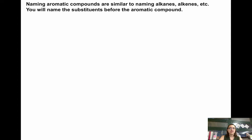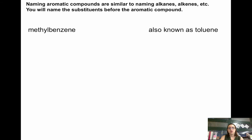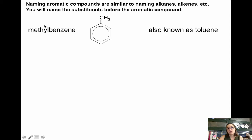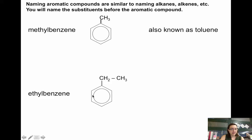Naming aromatic compounds is very similar to naming alkenes and alkynes. You're always going to name the substituents before the aromatic compound. So if you had a methyl group on benzene, the longest chain is your aromatic — that's benzene — so you'd just say methylbenzene. There's no need to say 1-methylbenzene, because whenever you number a ring, you always start with number one on one of the substituents. Now methylbenzene is also known as toluene. Ethylbenzene works the same way — you have a benzene ring with an ethyl group off of it.